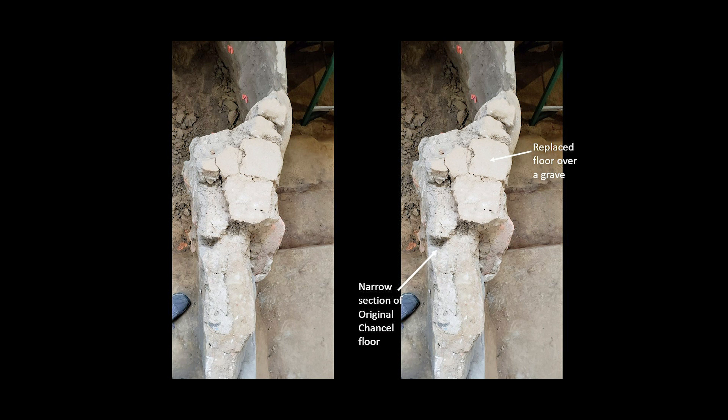We know that this was the earliest floor because in the profile we could see that it was sealing the original ground surface. There were a few areas in the chancel where sections of floor survived because they had slumped into graves as they settled. And instead of replacing that section and pulling it up, when the parish redid the chancel floor, they simply filled in the section, covered over those tiles, and leveled the whole area before placing in the new chancel floor.